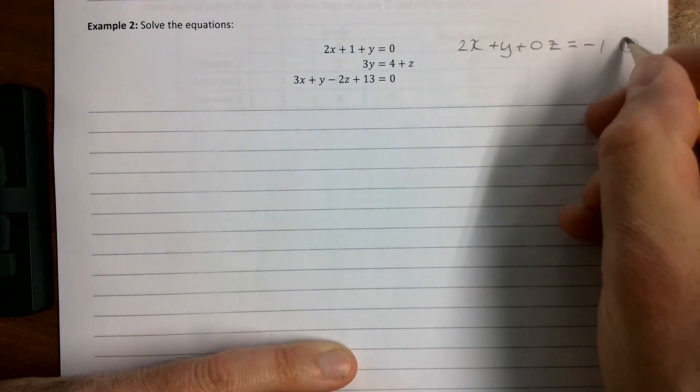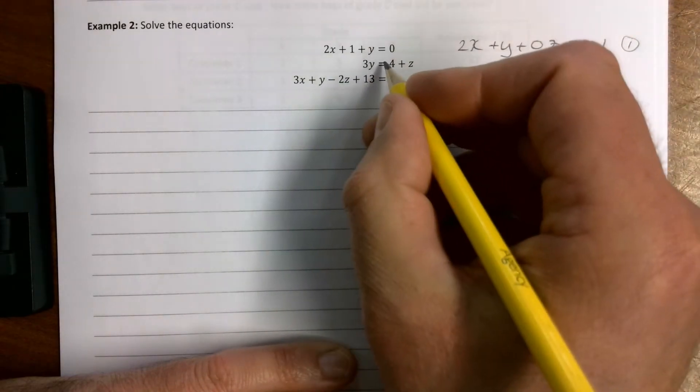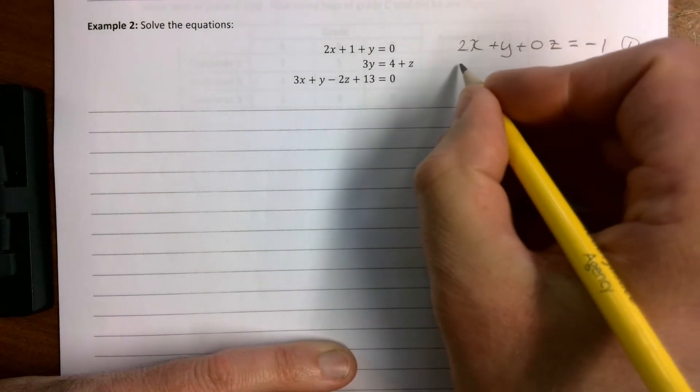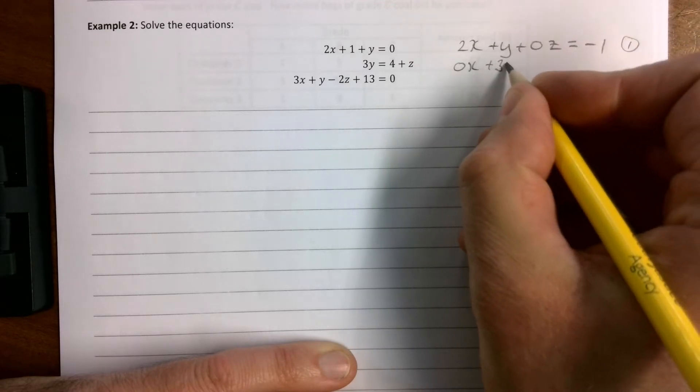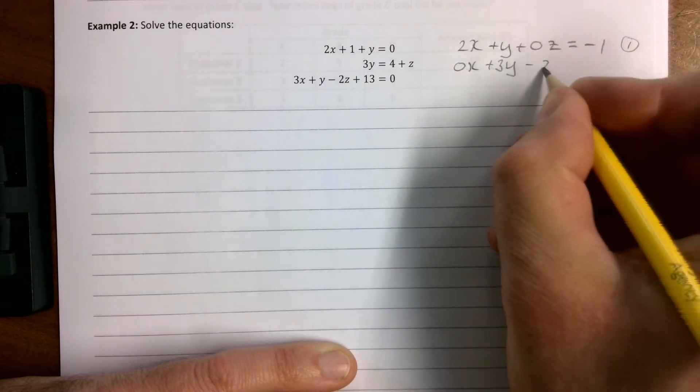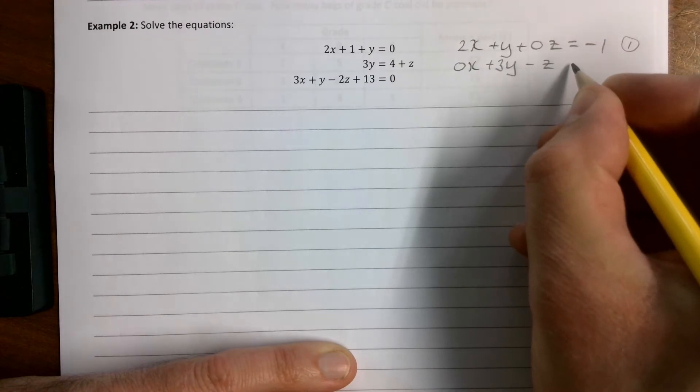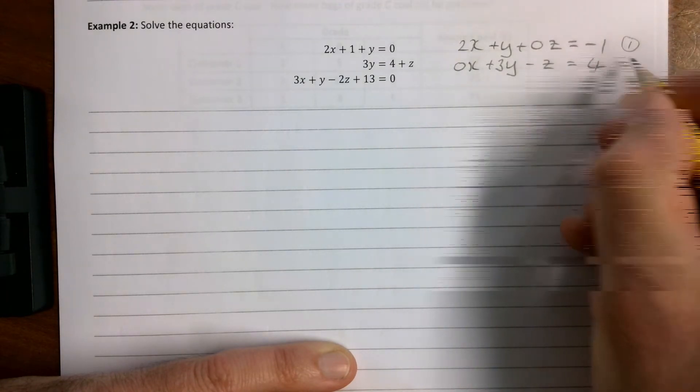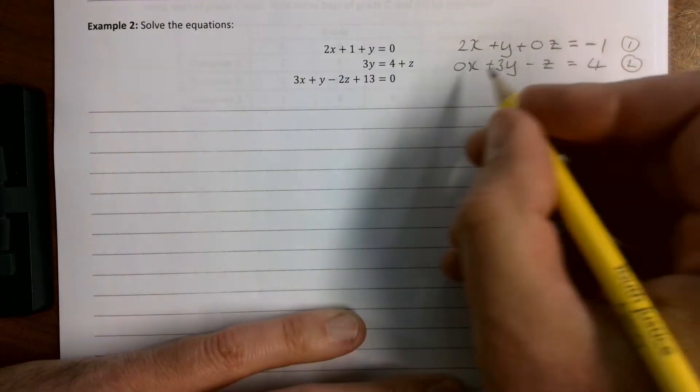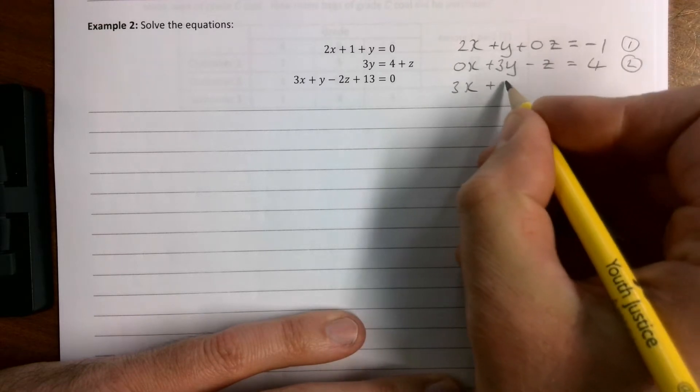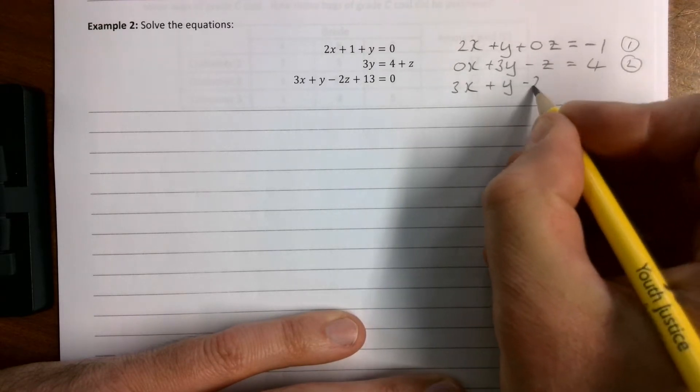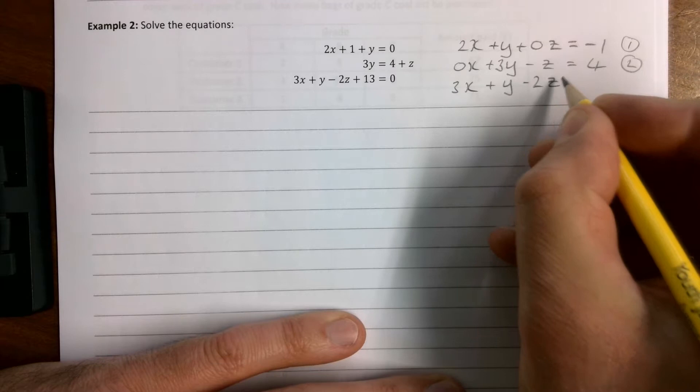I'm going to call that one number 1. This one here we're going to go for 0x plus 3y minus z equals 4, that's equation 2. And then equation 3 is going to be 3x plus y minus 2z equals minus 13, and that's going to be equation 3.